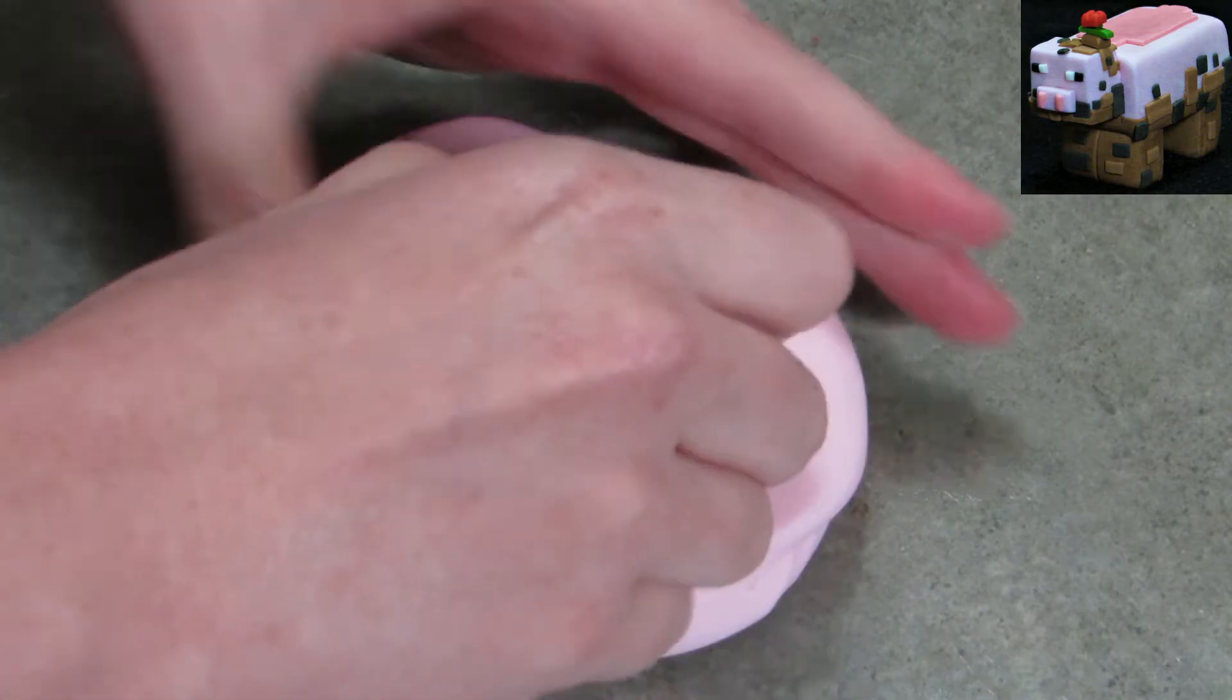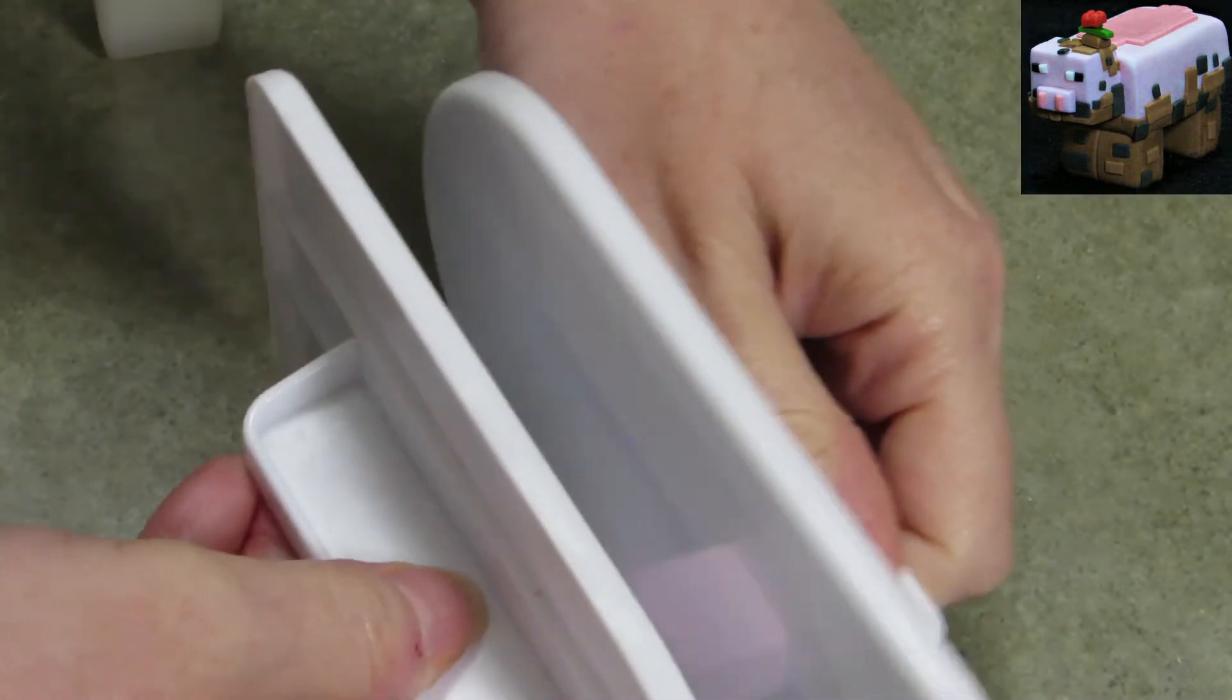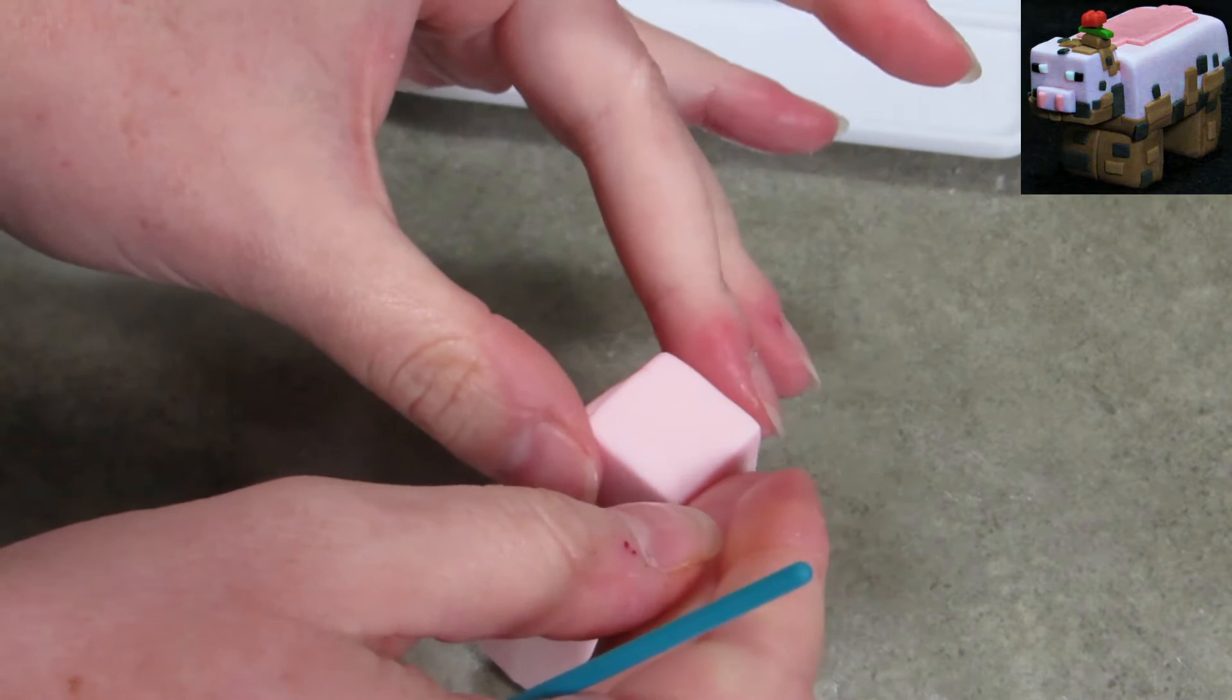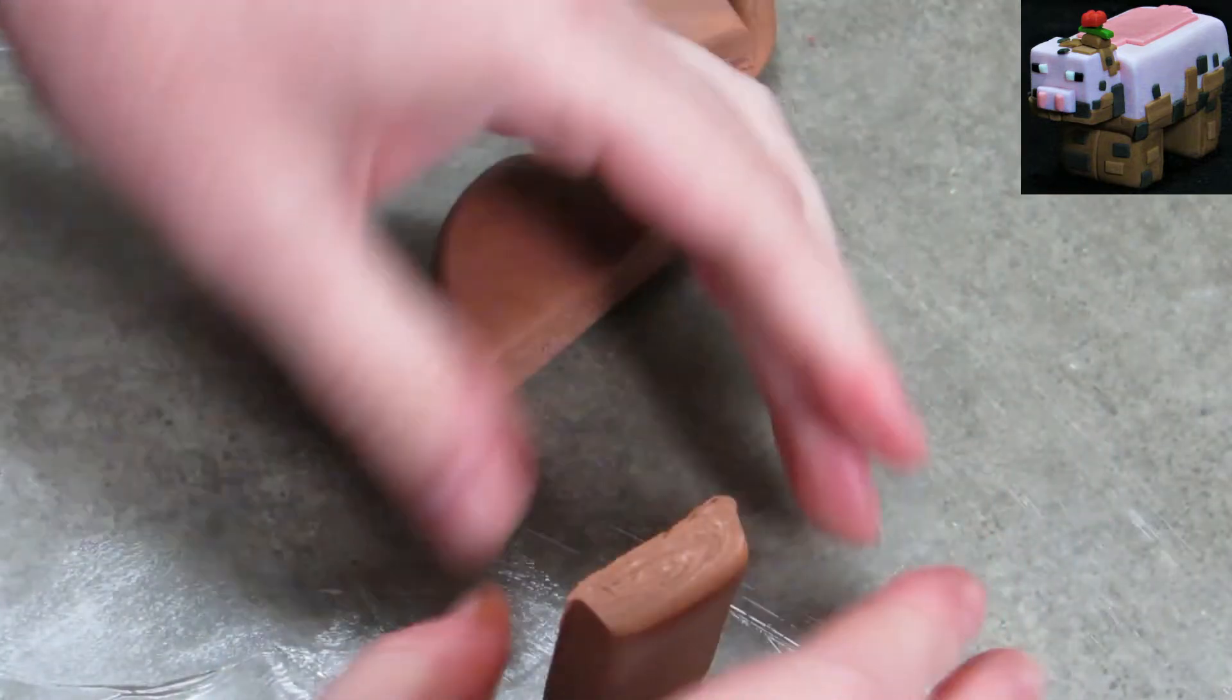This small square I'm making right here, the same thickness as before, is going to be the head. I want to say it's probably about a half inch thick, if I had to guess. I'm just using those paddles to make sure the edges stay sharper. I'm using some water to attach the head to the body. You saw I had it a little off-center there, and put it aside.